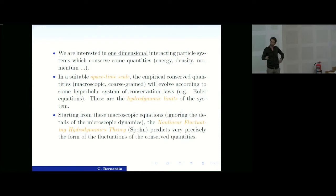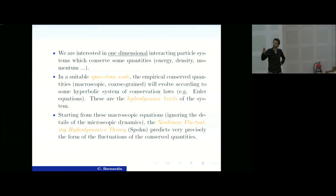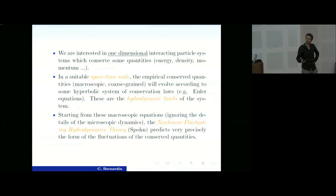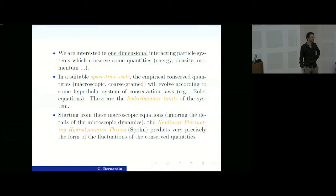The central question is: what is the super-diffusive process that you observe, and how is it universal with respect to the microscopic dynamics of your system? I will define some interacting particle system which is one-dimensional and which conserves some quantities — in my case called energy and volume, but you could think of energy density, momentum, etc. Since you have conserved quantities, if you rescale space and time, these empirical conserved quantities will evolve according to some macroscopic equation — in my case described by a system of conservation laws.